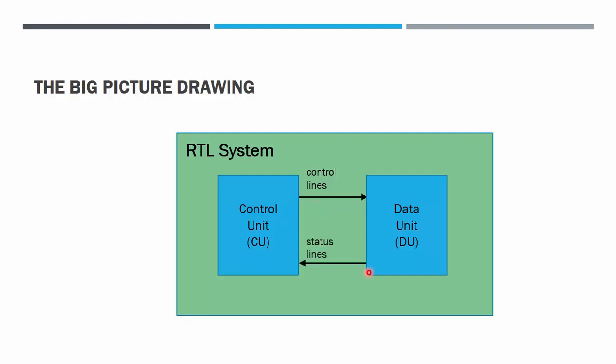And the one that comes from Data Unit to Control Unit are the status lines. Examples of these lines are the overflow status from Adder or Multiplier, for example, and also the comparison status from Adder or Multiplier.